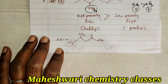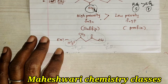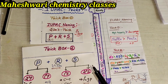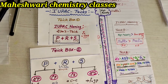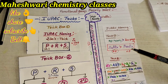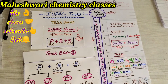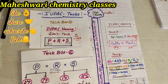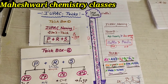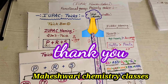Like this, we have to find out the prefix and suffix with the help of functional group priority order. In the previous class, I explained tricks for IUPAC naming. If you want to see those classes, I can provide that link in the description box. This is the functional group priority order trick — you must remember it. In the next class, I will explain IUPAC nomenclature complete rules along with examples. Subscribe to my channel Maheshwari Chemistry Classes, share with your friends. Thank you very much.